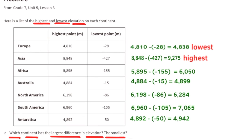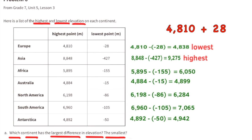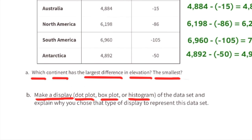Europe has the smallest difference in elevation because 4,810 minus negative 28 equals 4,810 plus 28, which equals 4,838. Part b: make a display — dot plot, box plot, or histogram — of the data set and explain why you chose that type of display.